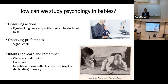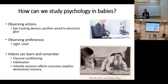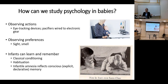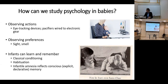Infantile amnesia refers to our absence of memory from the first three years of life. That reflects the development of the hippocampus, which is involved in consolidating long-term memories, and the fact that someone that young doesn't have the schema to classify information or form coherent narratives. They don't have language, and declarative memory — your semantic memory — is based on things you can declare. So to some extent, memory reflects language development.